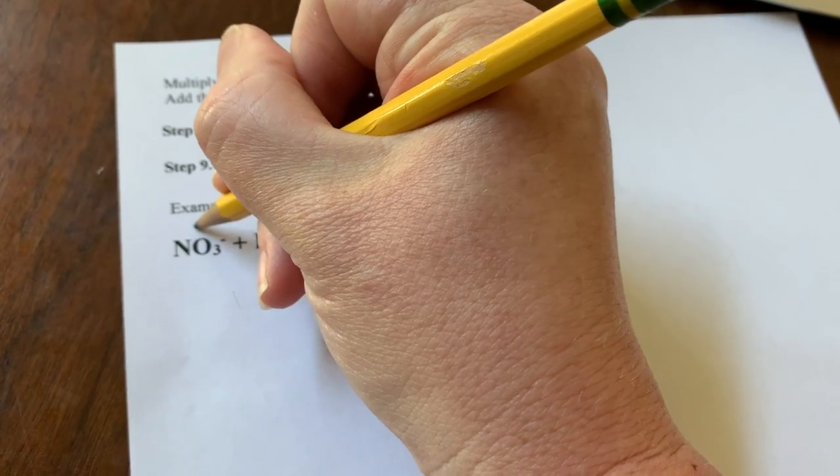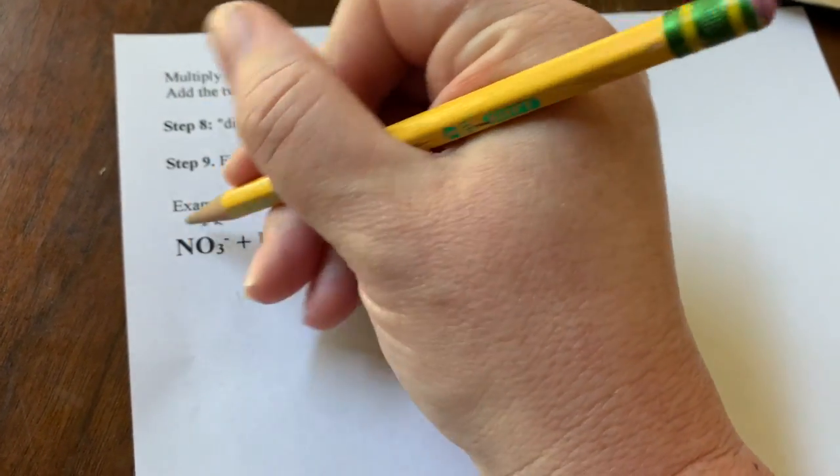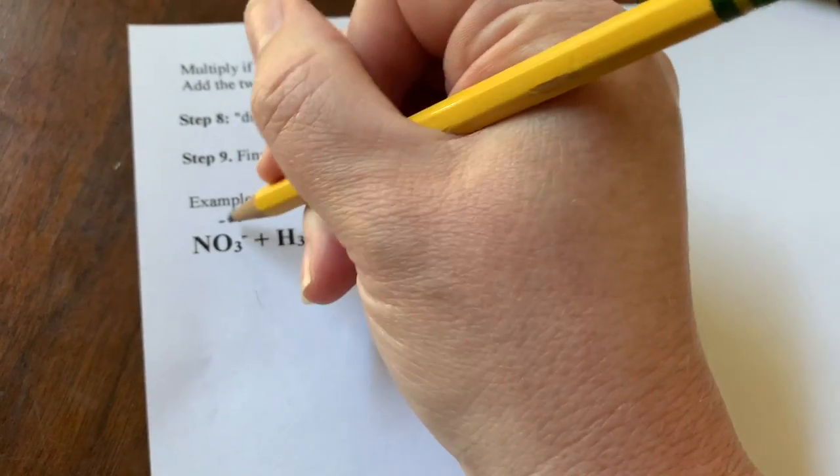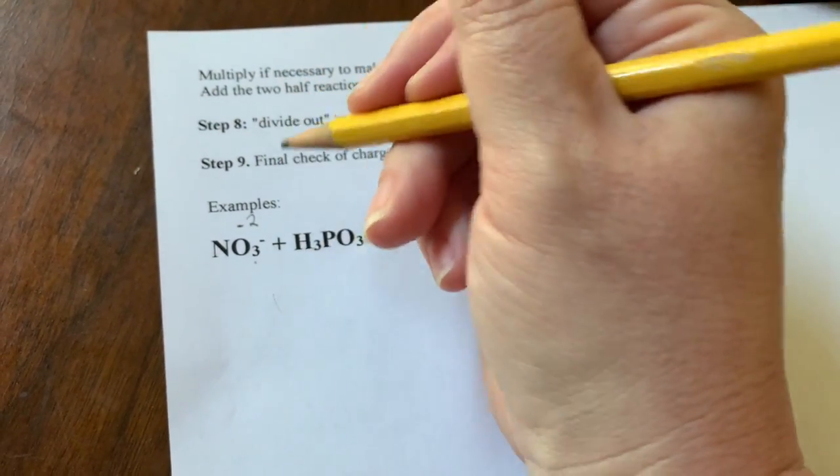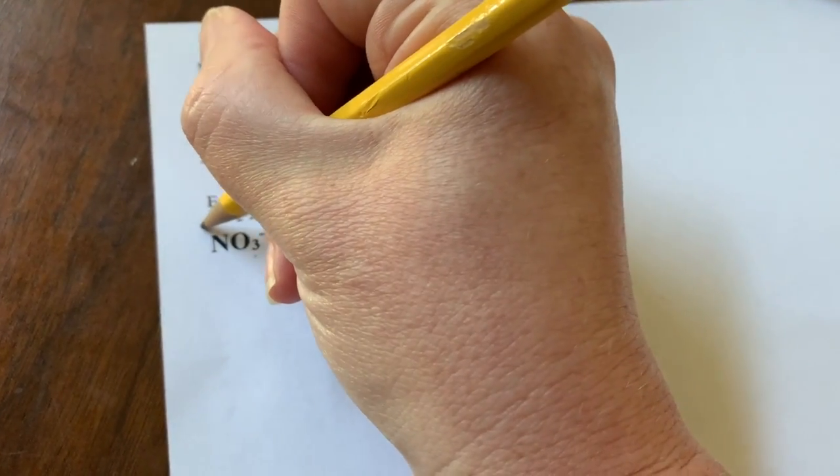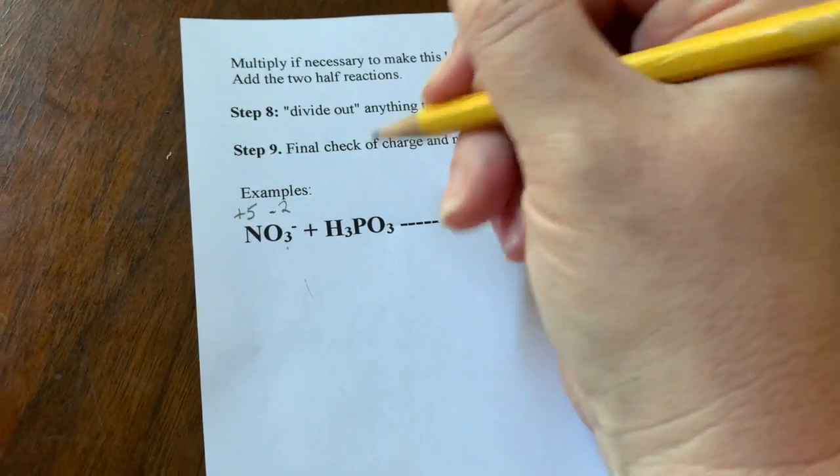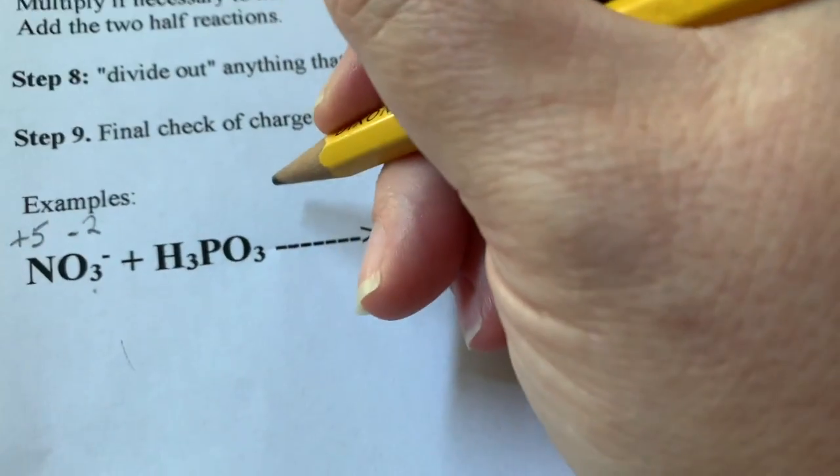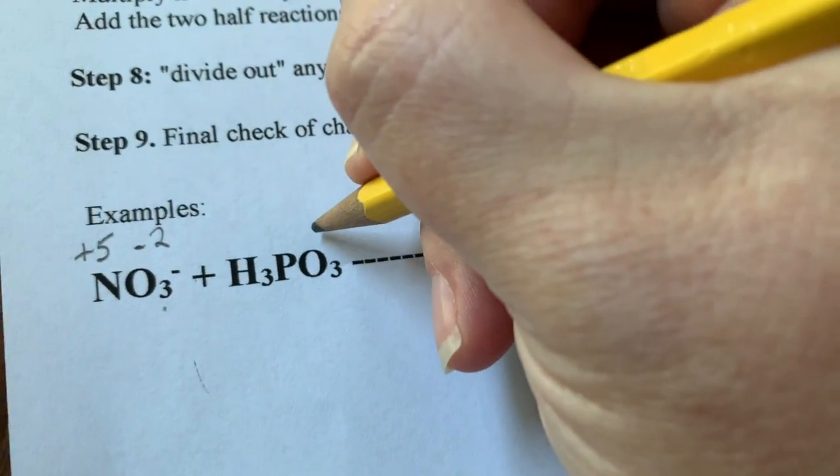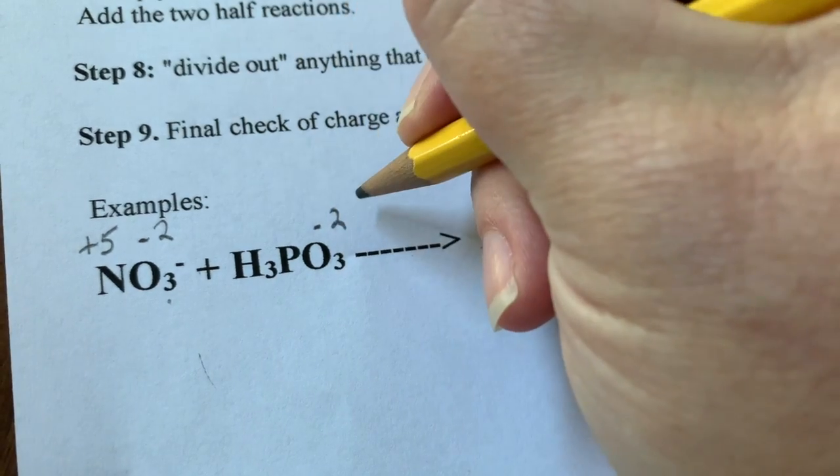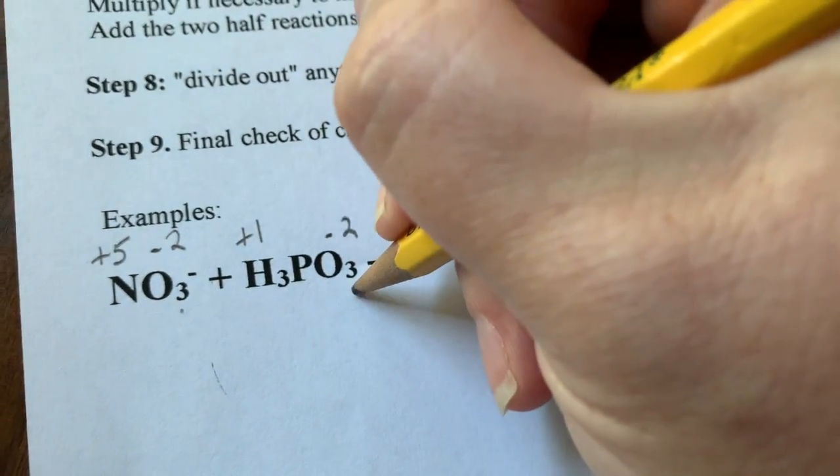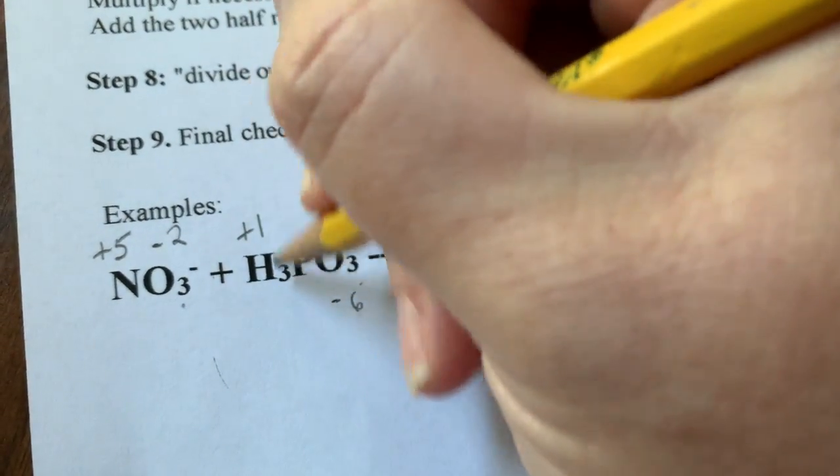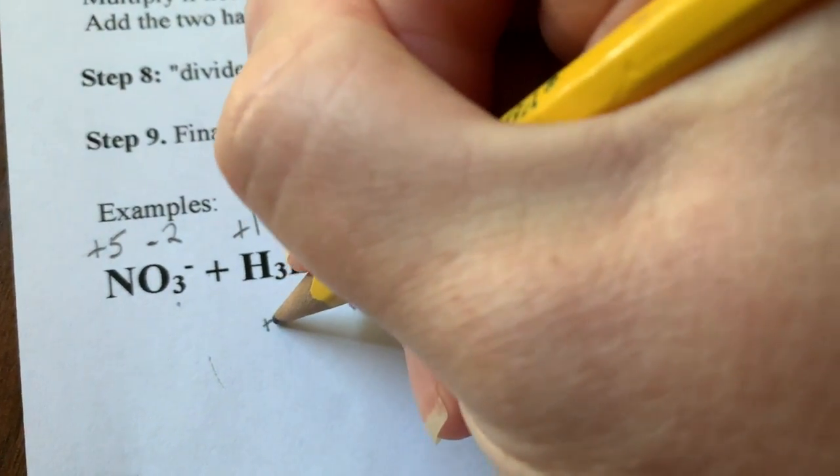So going through here, we know oxygen is negative two. I'm dealing with the nitrate ion here, so this is an overall negative one charge. So negative two times three is going to be a negative six. What plus negative six is going to give you a negative one? It's going to be a plus five. So I'm done with my nitrate. I'm going to head on over here to phosphorous acid, and oxygen is a negative two. We always know that. I'm not going to give you any weird exceptions with that. Hydrogen is a plus one. So the only one we don't know is phosphorus. So negative two times three is a total of negative six over there, and then I have three hydrogens, so that's plus three.